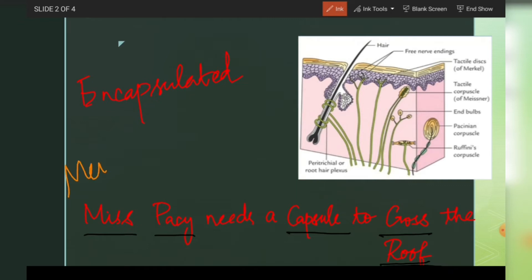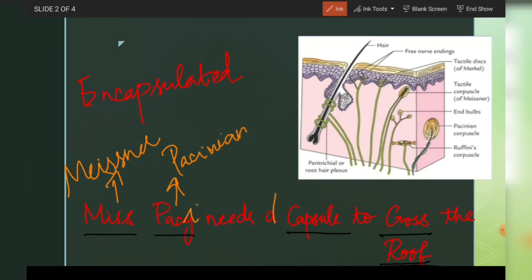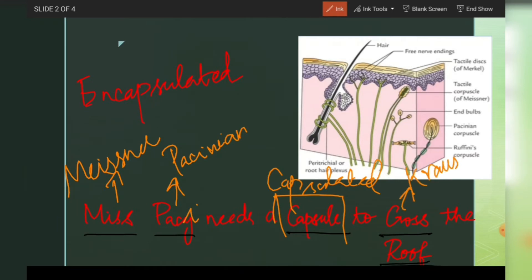'Miss' stands for Meissner's. 'Pessy' stands for Pacinian. 'Needs a capsule' reminds us that all of these are encapsulated receptors. 'Cross' stands for end-bulbs of Krause. 'Roof' stands for Ruffini.